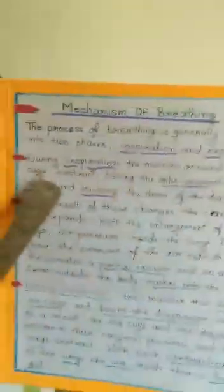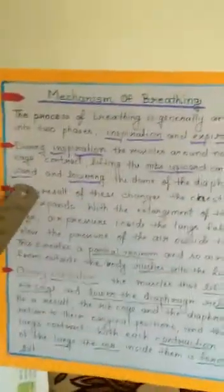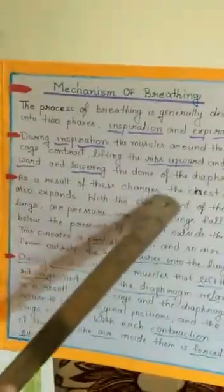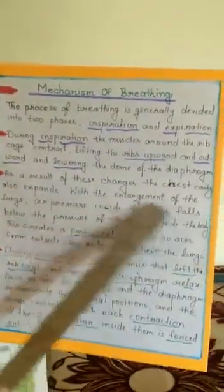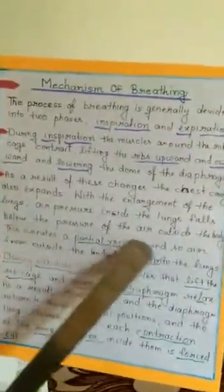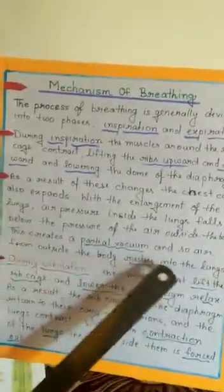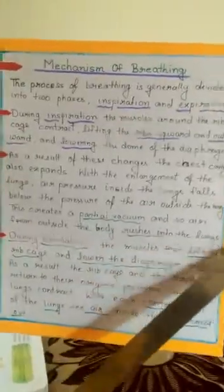Next is the mechanism of breathing. The process of breathing is divided into two phases: inspiration and expiration, also known as inhalation and exhalation. During inhalation, the muscles around the ribcage contract, lifting the ribs upward and outward and lowering the dome of the diaphragm. As a result, the chest cavity expands. With the enlargement of the lungs, air pressure inside falls below the pressure outside the body, creating a partial vacuum, so air from outside rushes into the lungs. This is the side view and front view during the inhalation process, showing the expansion of the chest.